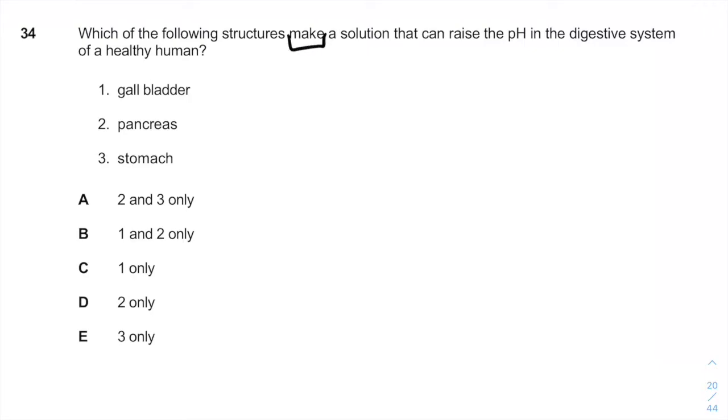Which of the following structures make—which means it's directly making the solution that can raise the pH, which means make it more basic in the digestive system of a healthy human?